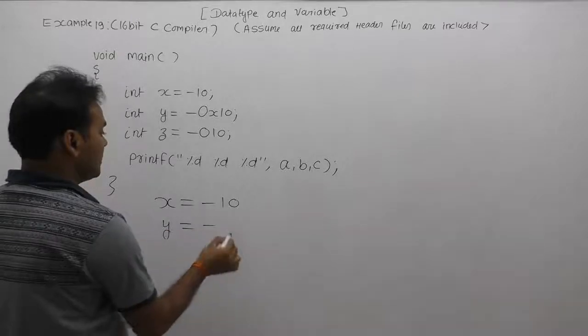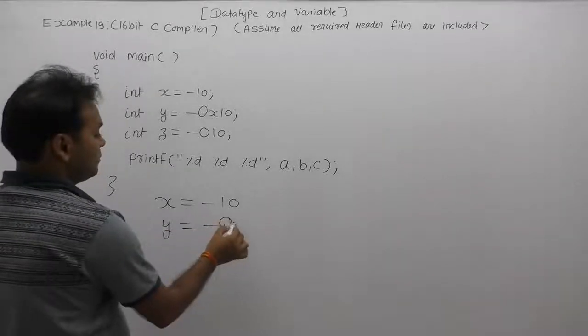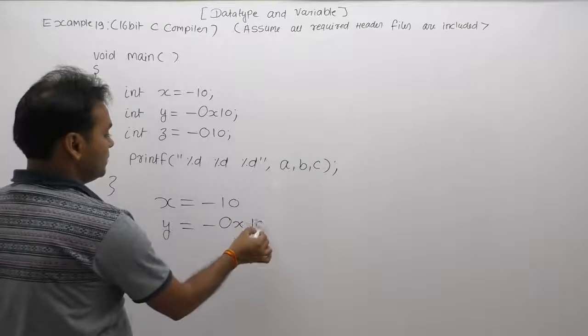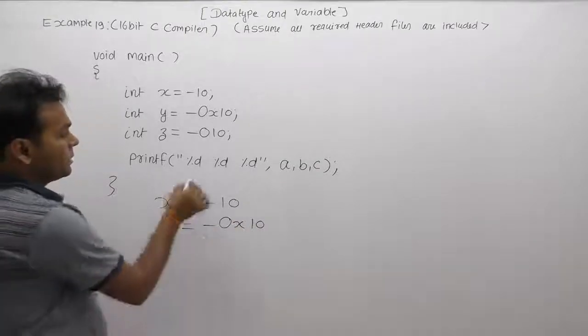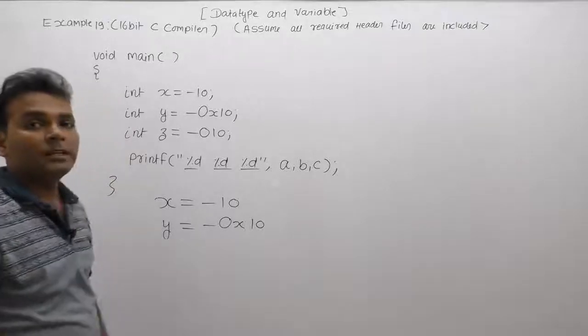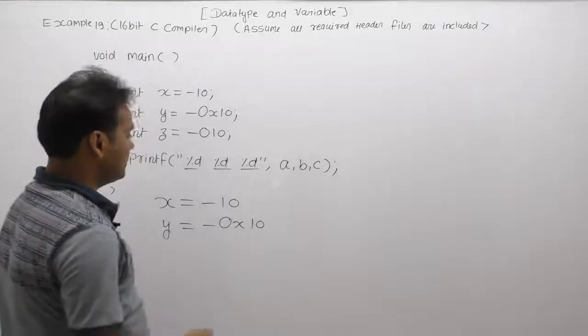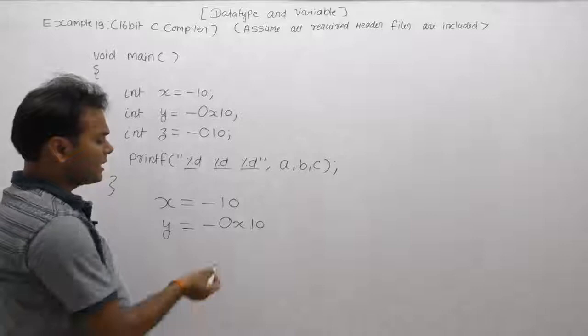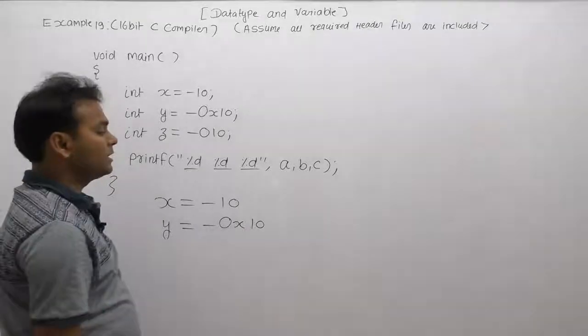In these cases, values are assigned as 0x10. The value is displayed using percent d, which shows the value as output in decimal number system. The equivalent decimal value is what we need to find.